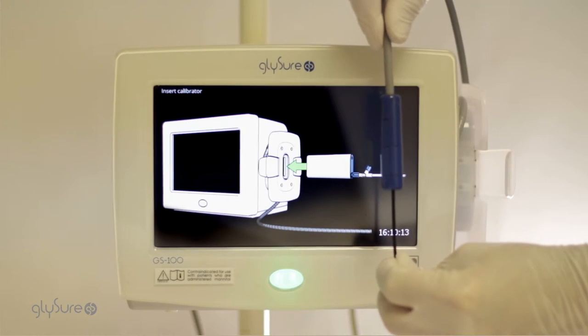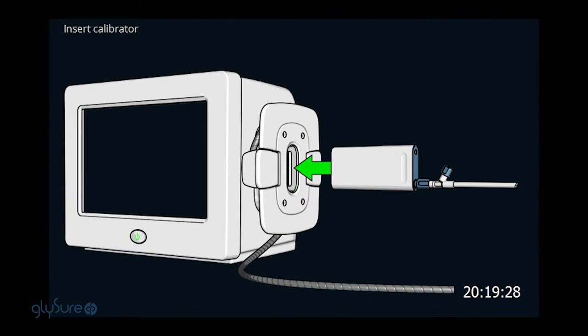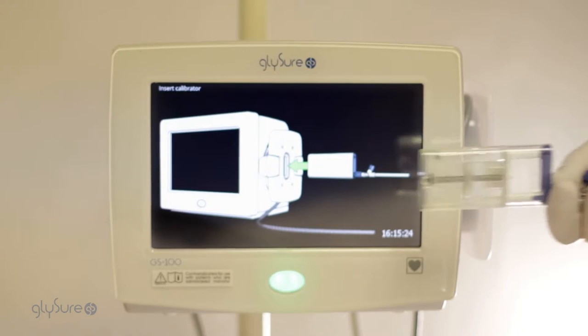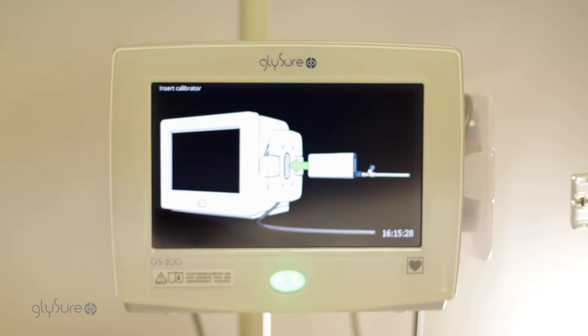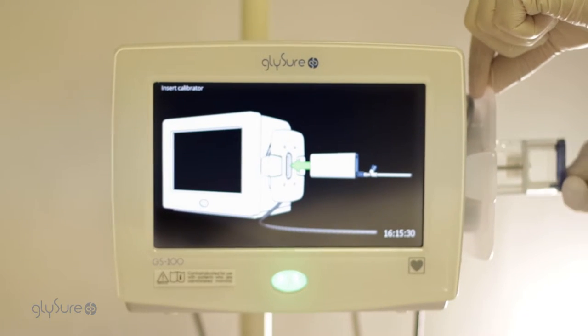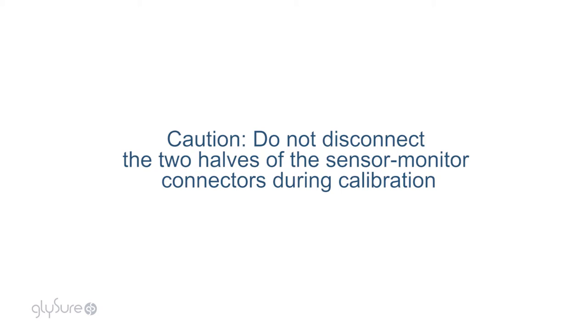Connection of the sensor prompts the insert calibrator screen. Ensuring the groove is uppermost, gently insert the calibration pod into the monitor. Caution, do not disconnect the two halves of the sensor monitor connectors during calibration.